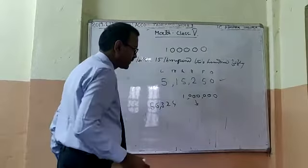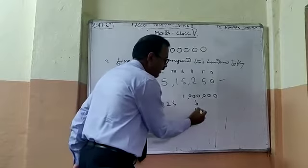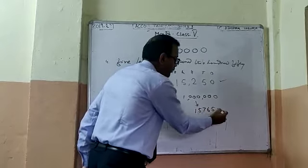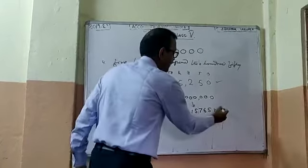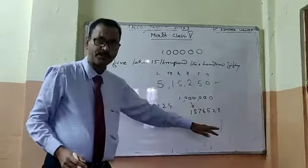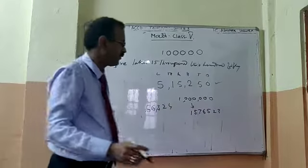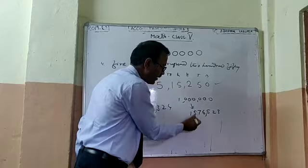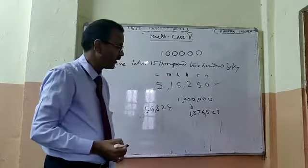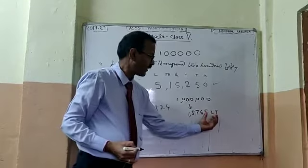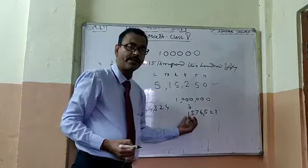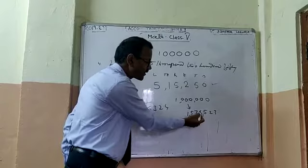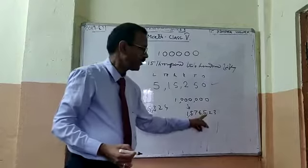And in the international process, suppose the number given is one, five, six, five, seven, five, two. Writing in the international process: first write commas after three digits, then again after three digits. That means this is the hundreds place, this is the millions place. So we write: one million, five hundred seventy-six thousand, five hundred twenty-three.